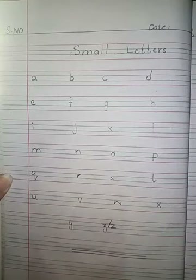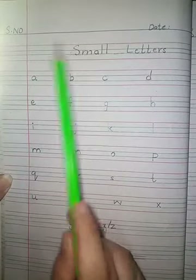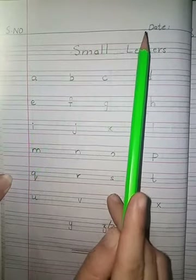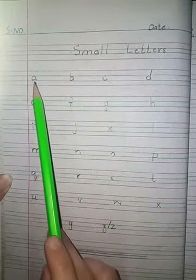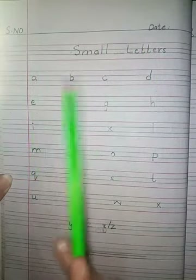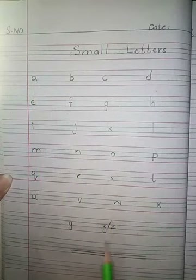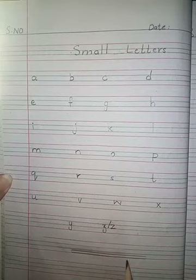Then come to the next page. Write the serial number and date on each and every page. Write small letters from A to Z on this page, and after writing small letters, draw a finishing line.